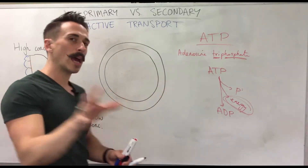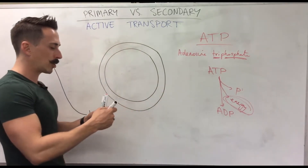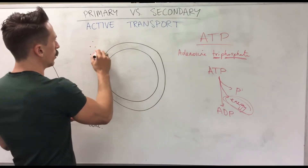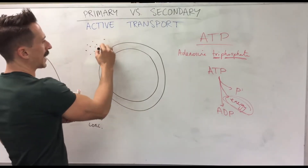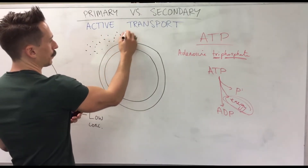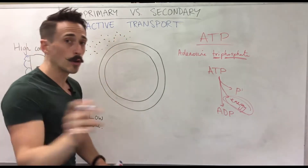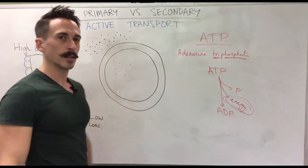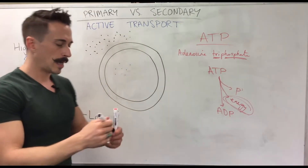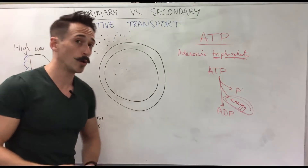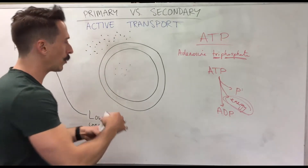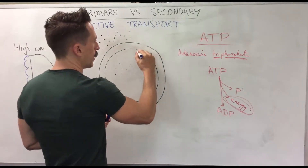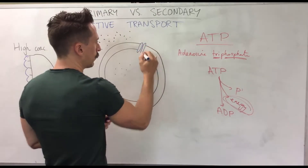So here we have a cell. Let's say there is a high concentration of a substance outside this cell and a low concentration of that substance inside the cell. All cells have channels embedded in their membrane.